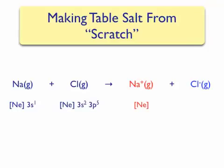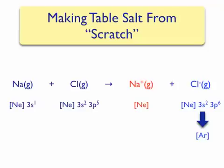Chlorine, on the other hand, has 7 valence electrons: 2 in its 3s subshell and 5 in its 3p subshell. It needs one more electron, which it can obtain from the sodium atom to achieve a noble gas electron configuration. When it gains this electron, it has a full 3p subshell. This makes the chloride ion isoelectronic with argon. Note that both the sodium ion and the chloride ion have noble gas electron configurations, which are especially energetically stable.